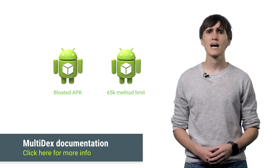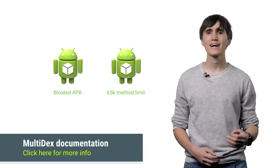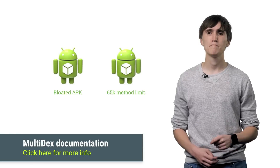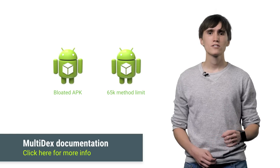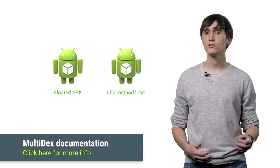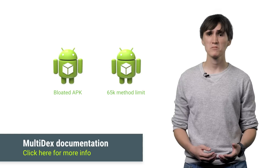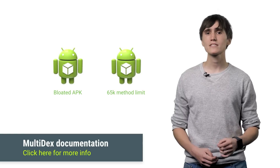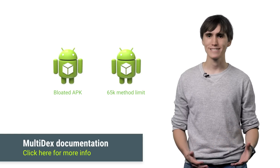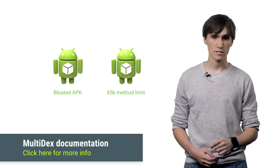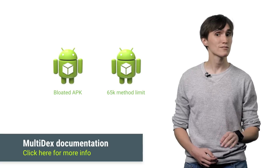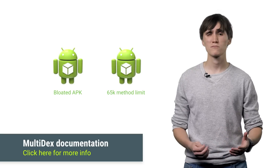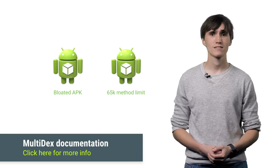Even more worrisome is the dreaded 65K method limit. The Android runtime assigns a numeric identifier to each method. This identifier is 16 bits wide. So if you have more than 2 to the 16 methods in your app, it's not going to compile. The only way around this is the new multi-dex solution. And trust me, you do not want to do that — it's pretty much as much fun as going to the dentist.